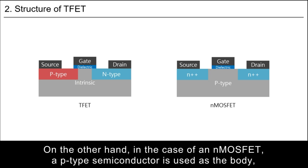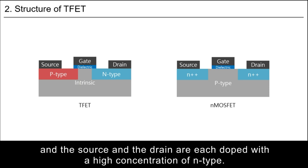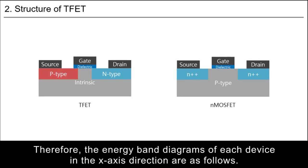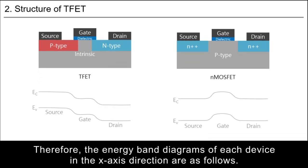On the other hand, in the case of an N MOSFET, the P-type semiconductor is used as the body, and the source and the drain are each doped with a high concentration of N-type. Therefore, the energy band diagrams of each device in x-axis direction are as follows.